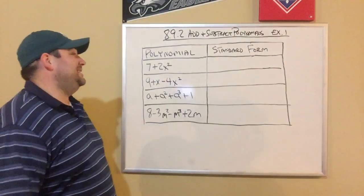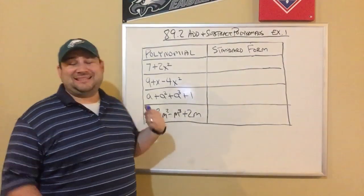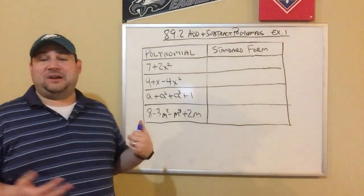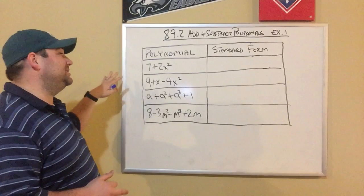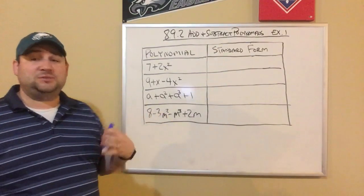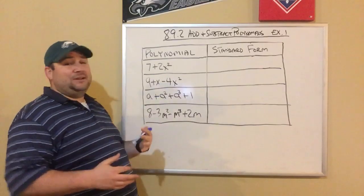Okay, pre-algebra, we're on example one, lesson two of this unit on polynomials. Today we're talking about adding and subtracting polynomials. In our first example, before we even add, subtract, even in the future when we get into multiplying all those things, I want to talk about standard form.